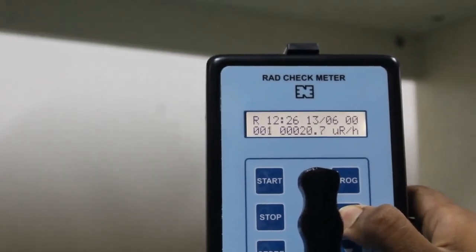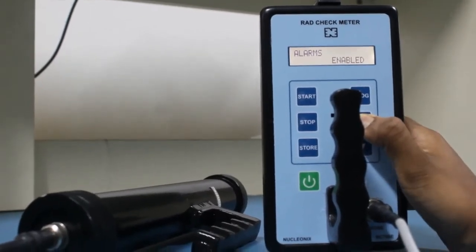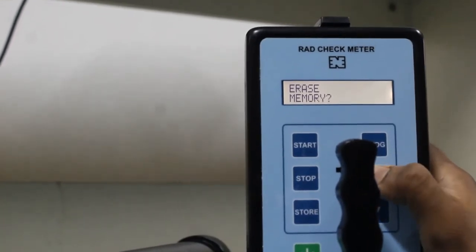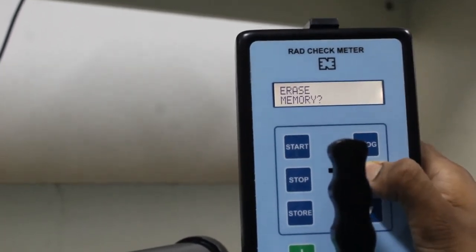Alarms allow the user to hear the audio visual alarms above the alarm set point. Erase memory is used to erase the readings or memory stored in the machine.